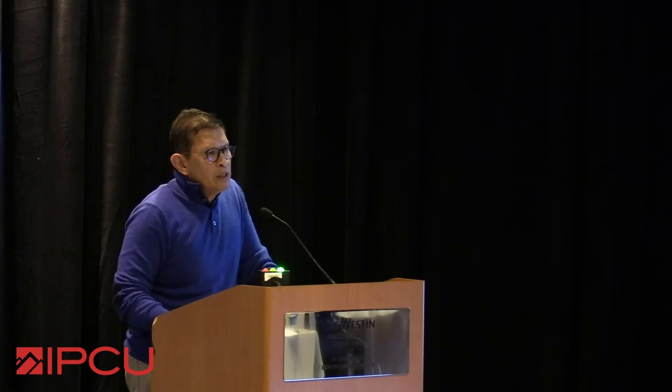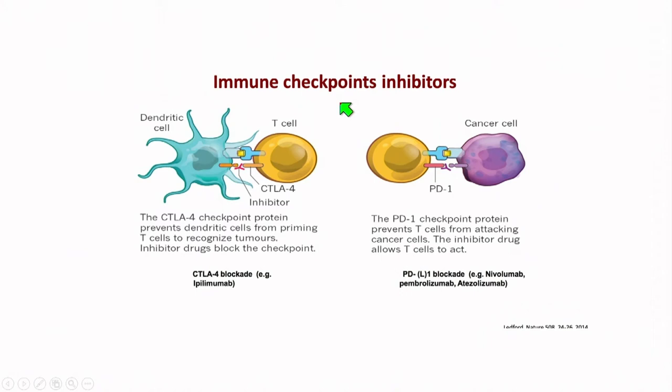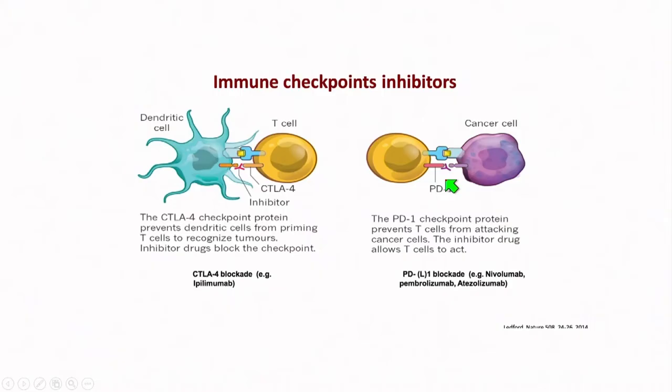Other approaches include viral vectors — native or engineered viruses that target, infect, and kill cancer cells — though one oncolytic viral therapy had a negative readout last year. Checkpoint inhibitors: CTLA-4 inhibitors target the priming phase, while anti-PD-1 and PD-L1 inhibitors act at the effector side.